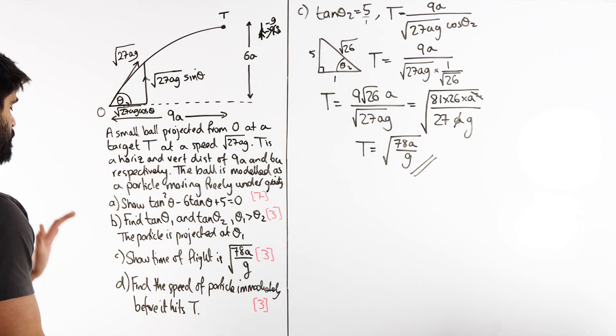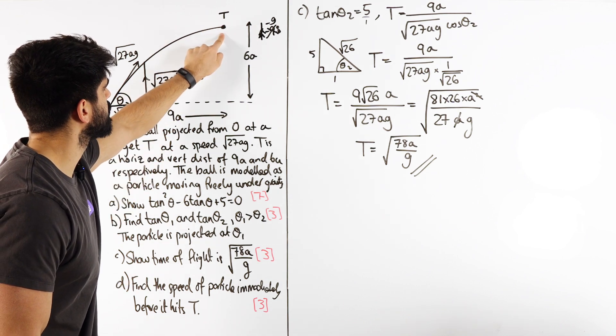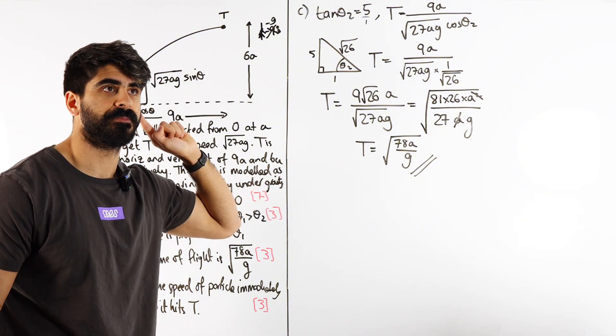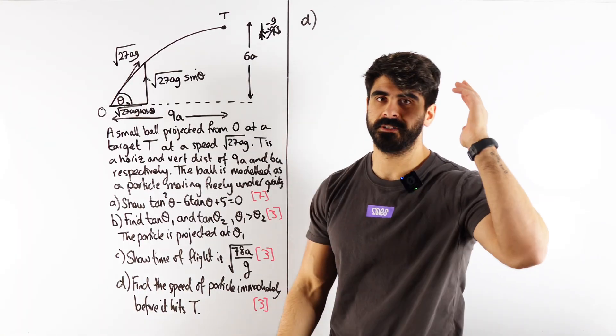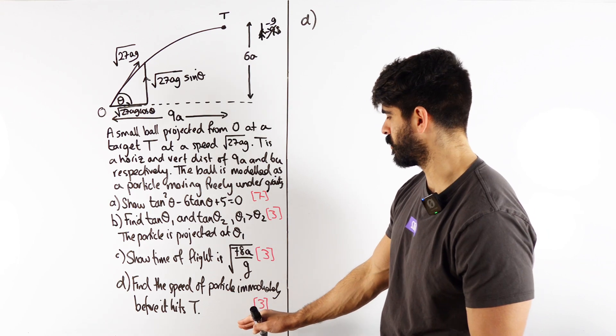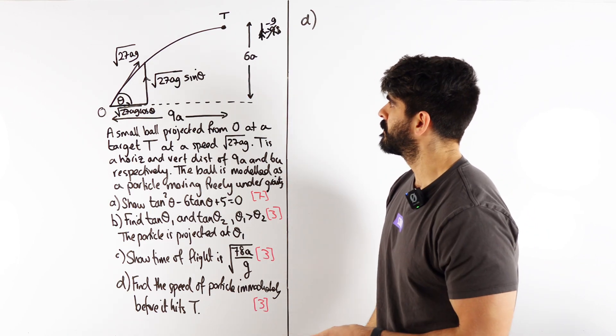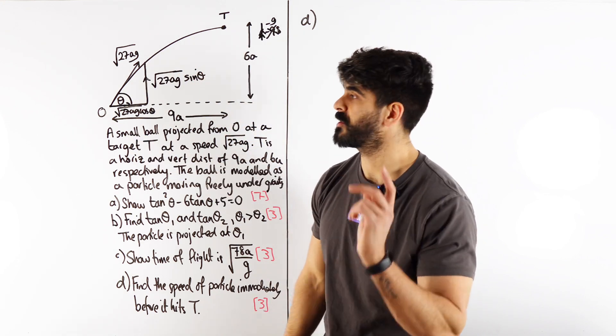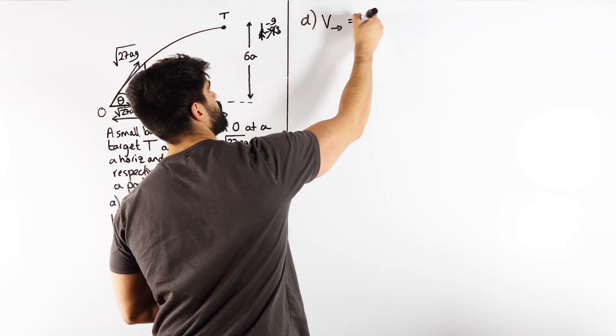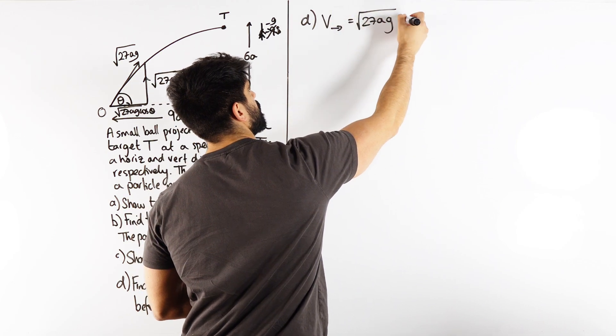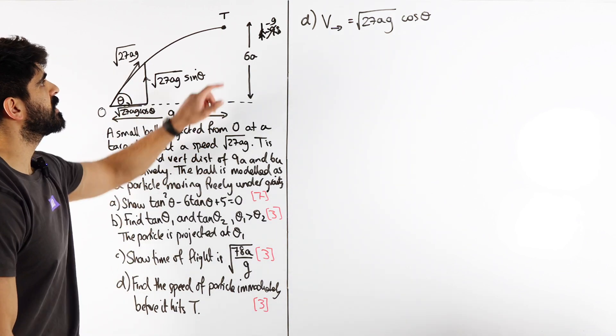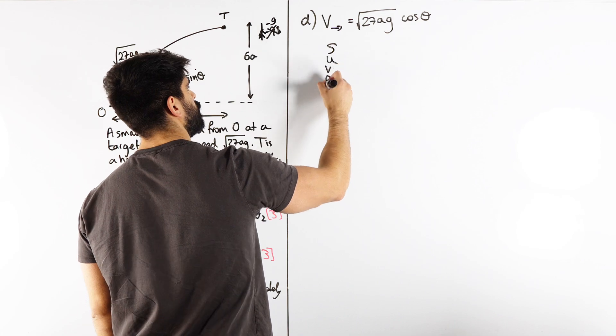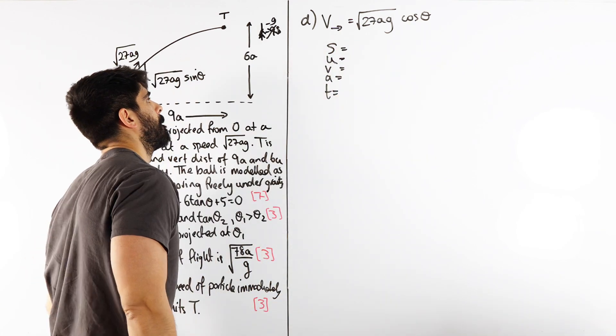Part D: Find the speed of the particle immediately before it hits T. I decided to just clear the board, it was stressing me out. At any point of this motion, we know that the horizontal speed is root 27ag cos theta. We just need to work out what that vertical speed is. We have the horizontal, what's the vertical? We're going to have to go back to SUVAT. We know s is 6a, the speed vertically was root 27ag sin theta, we want to know what v is, a is minus g.